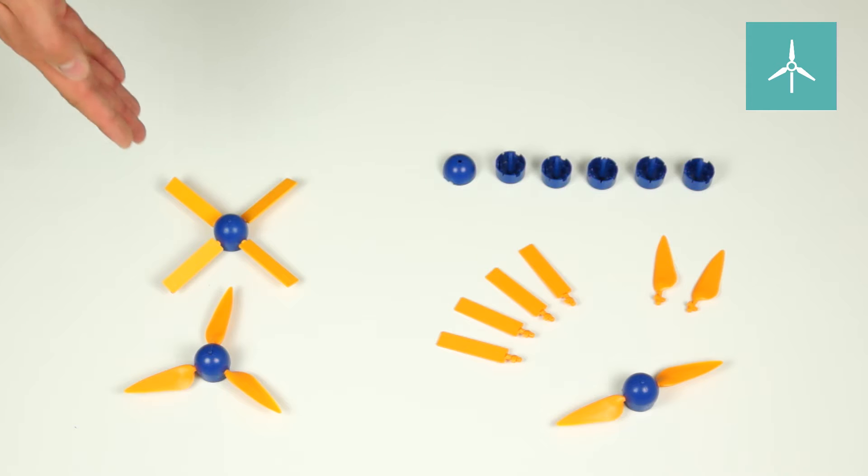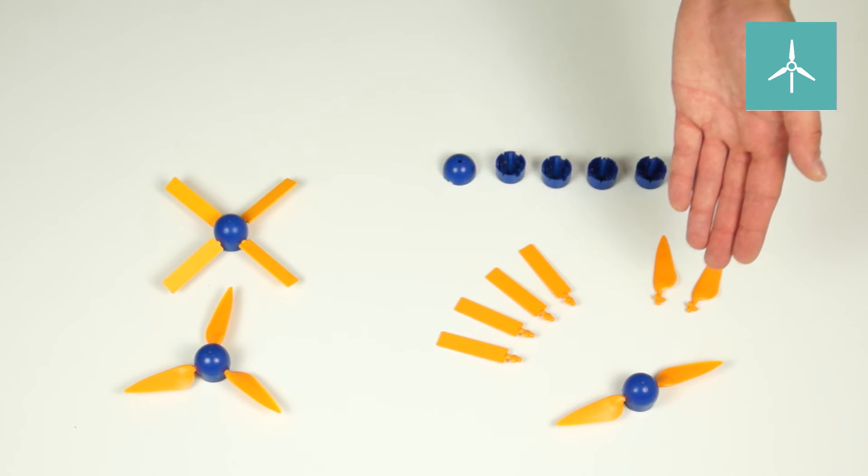Two firmly assembled wind rotors are included for experiments in primary school. For experiments in secondary school, manifold combinations are possible concerning pitch angle, number of blades and blade profile.